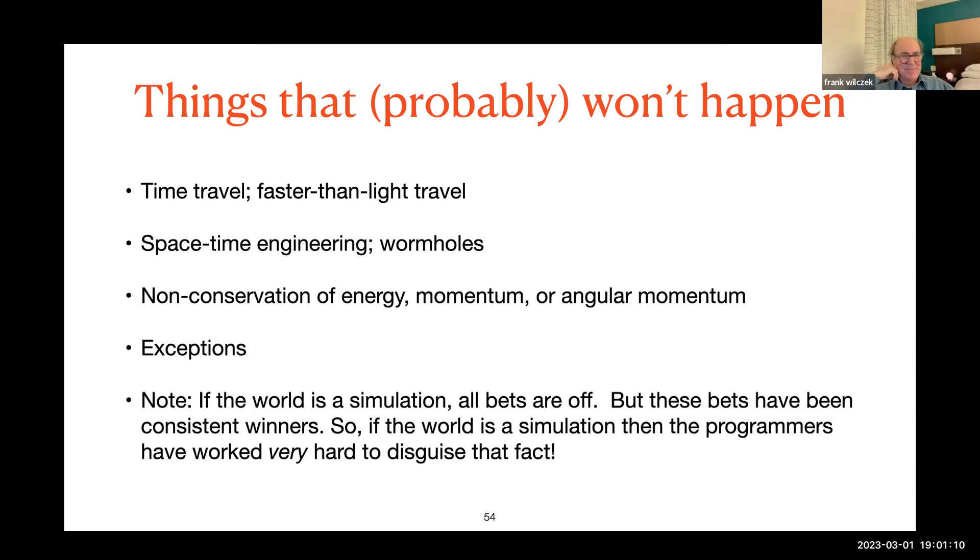And in general, the idea that there are exceptions to the laws of physics, well, could have been, but doesn't seem to be the case. And that's actually connected to the conservation of energy. Conservation of energy is deeply related to the fact that the laws of physics don't change in time, and the other laws are related to their unchanging nature in space and under rotations. Those all seem to work very well. One particular note, because this speculation that the world is a simulation has somehow captured the imagination of many people. If the world is a simulation, then all bets are off and exceptions could very well be part of the program. But the bets based on the principles that I've outlined here have been consistent winners, so that if the world is a simulation, then the programmers have worked very hard to disguise that fact.